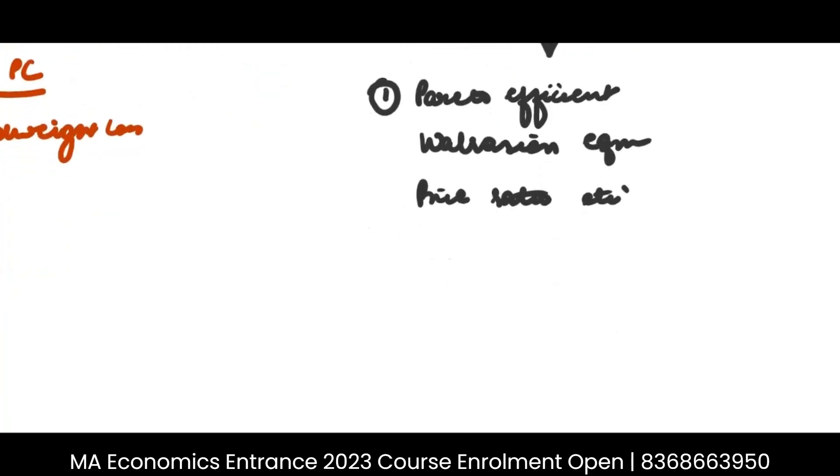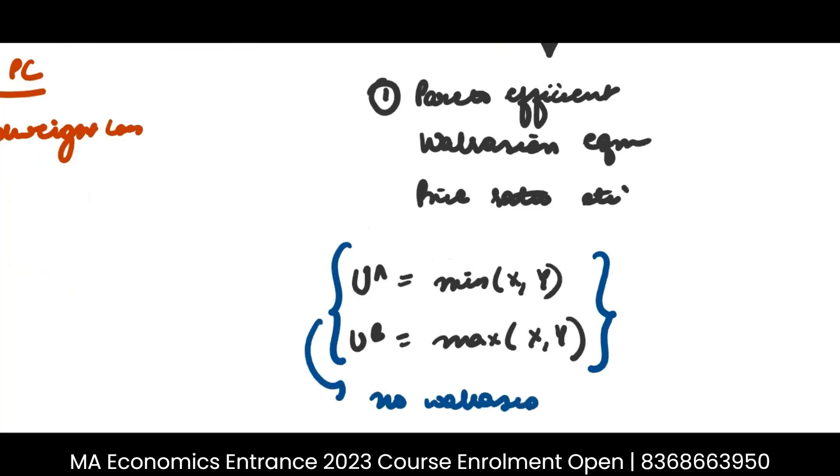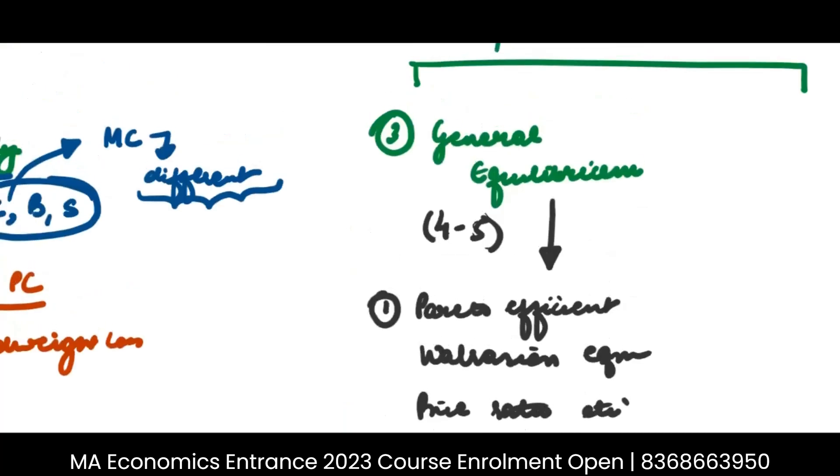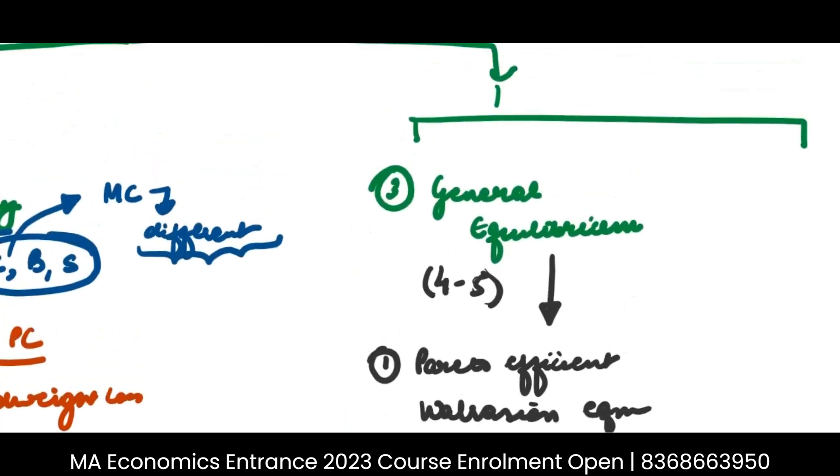So now, here the functions would be very different. For example, individual A might have a utility function like this, min of x, y. And B might have a utility function max of x, y. So you should know, because we have practiced this so much, you should know that when I have one min and one max, there is no Walrasian equilibrium. So this way, you should be thorough with different examples here. That's the third part.